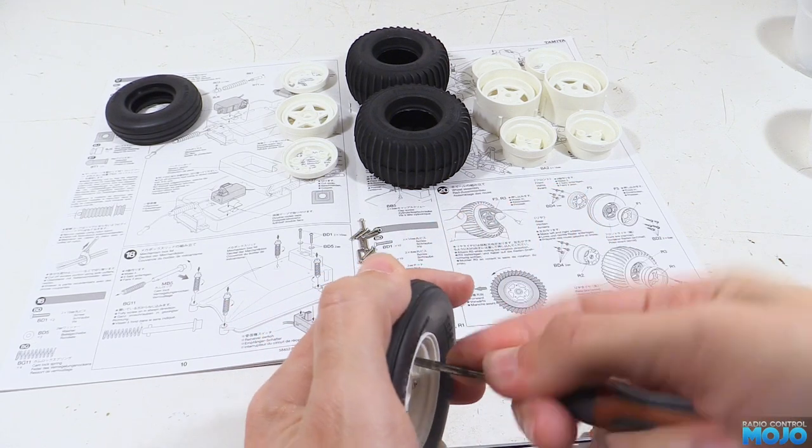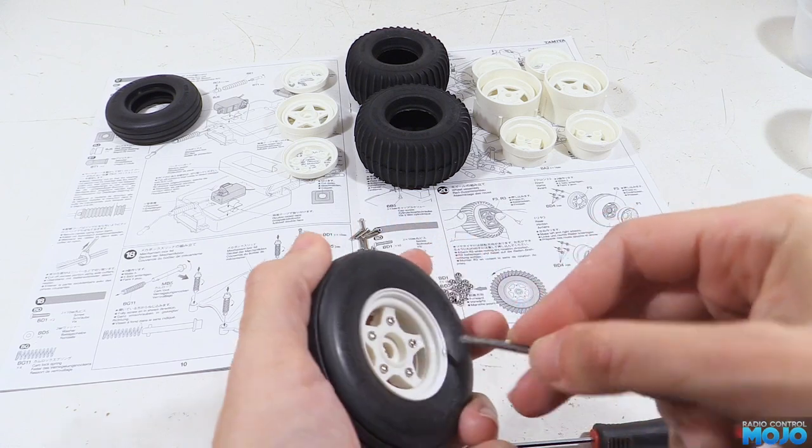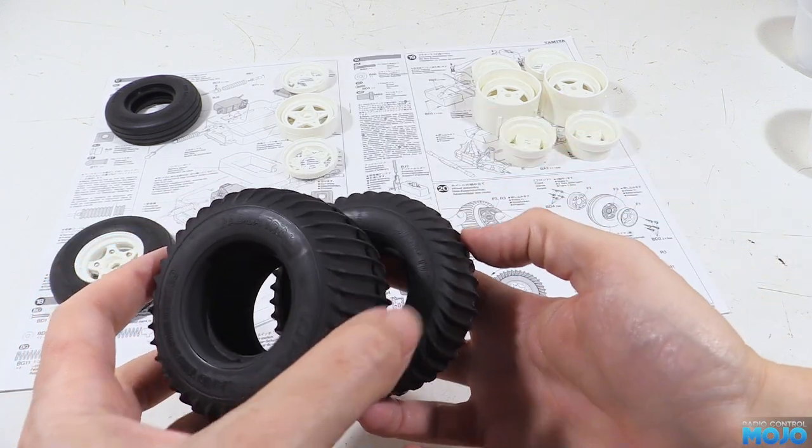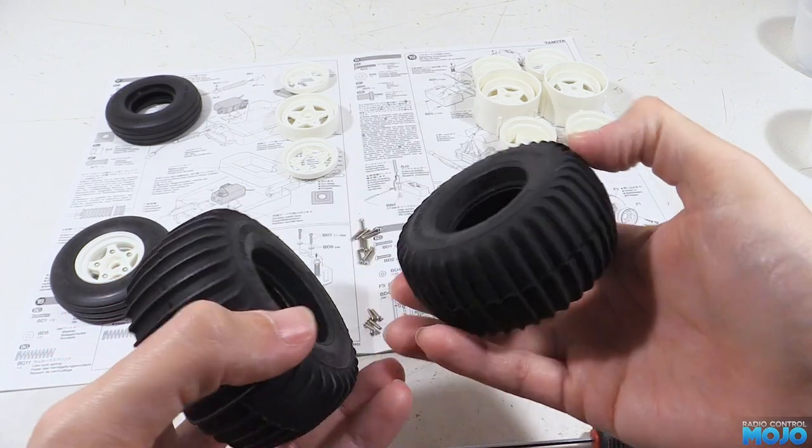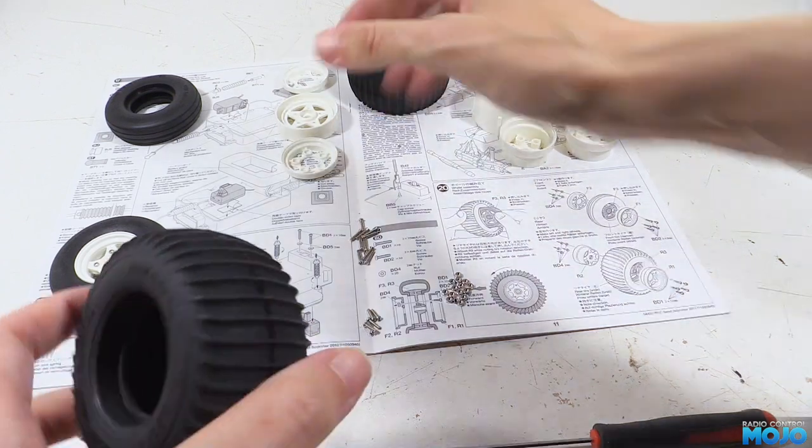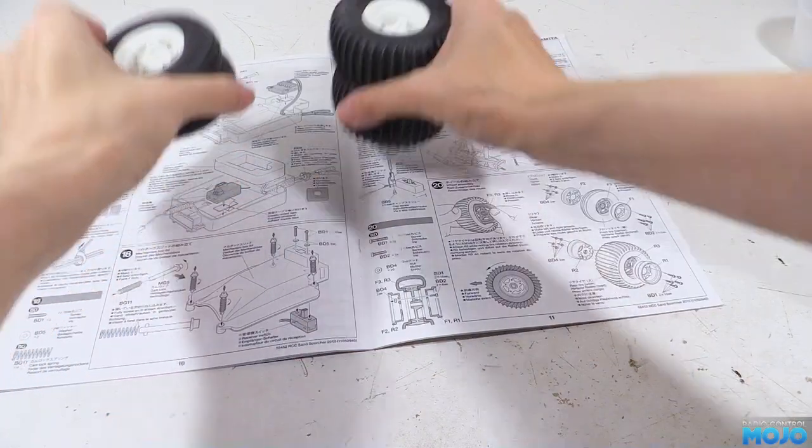The rears are exactly the same, except they're sided. There's a diagram in the manual that shows the tyre tread, but really make sure that you get a left and a right. You really don't want to have to take them apart again. With all four done, we can fit them to the chassis.